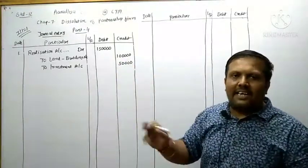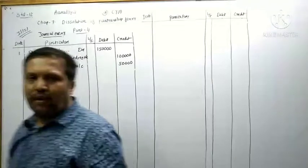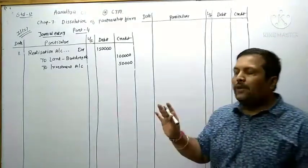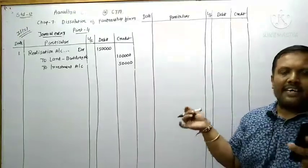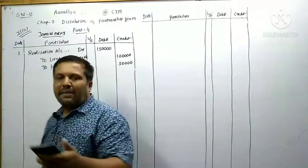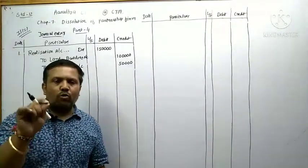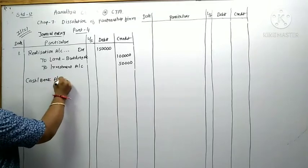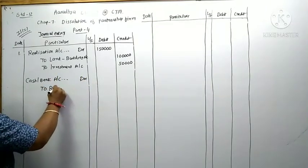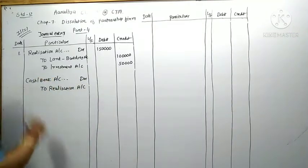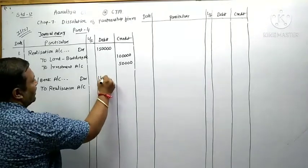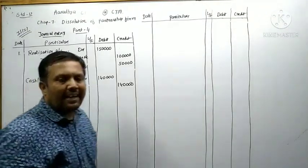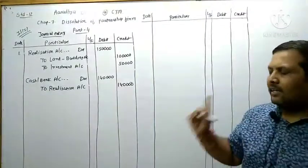Land and Building 1 lakh and Investment 50,000 - both are realized. Realization is when assets are sold for their realizable value. Land and Building realized at 80,000 and Investment at 60,000. So 80,000 plus 60,000 equals 1,40,000 realized. Cash and Bank Account debited to Realization Account for 1,40,000 rupees.